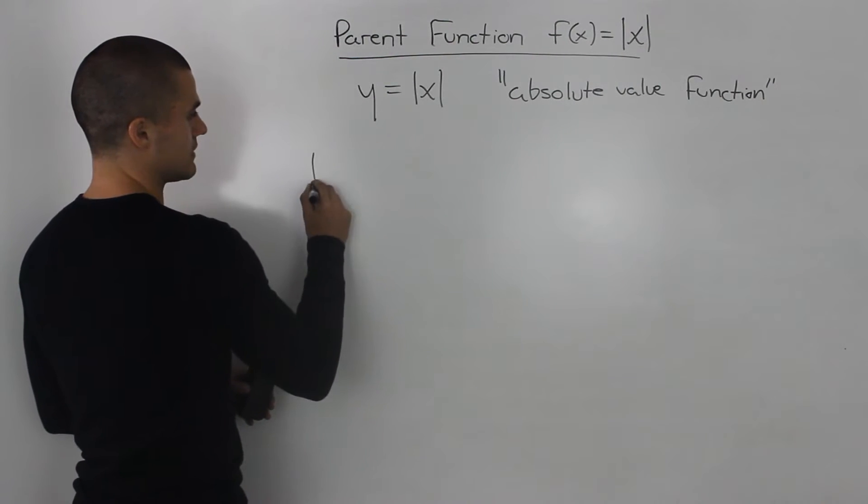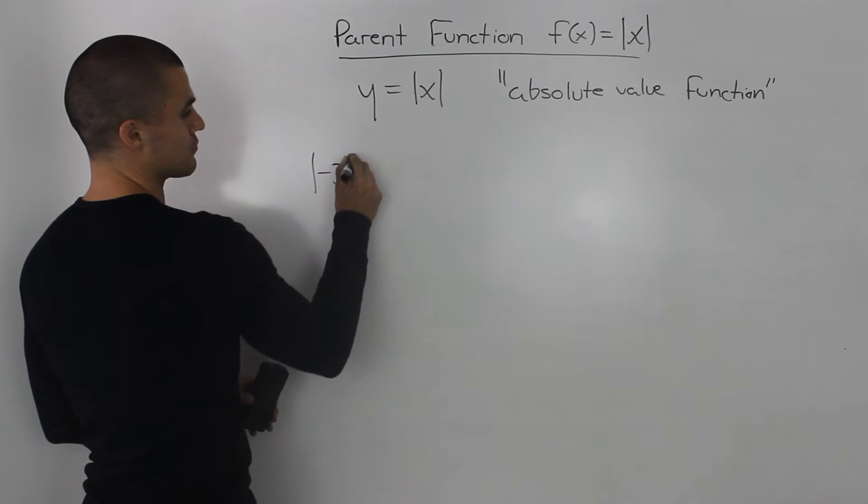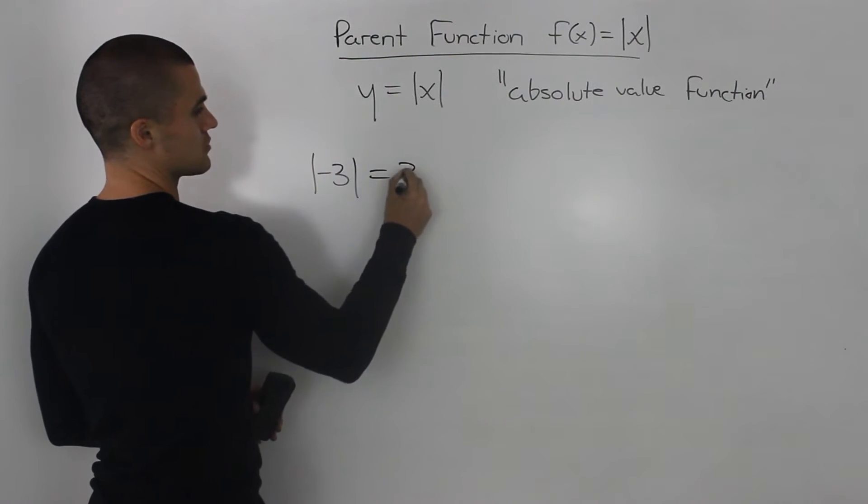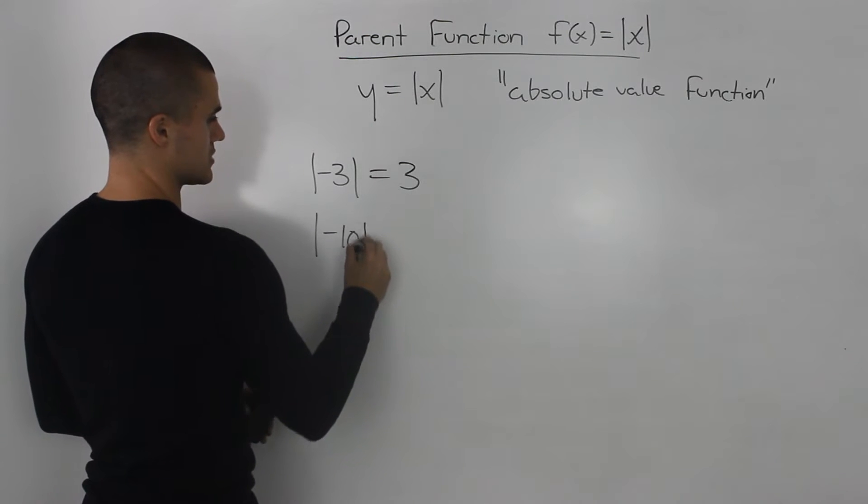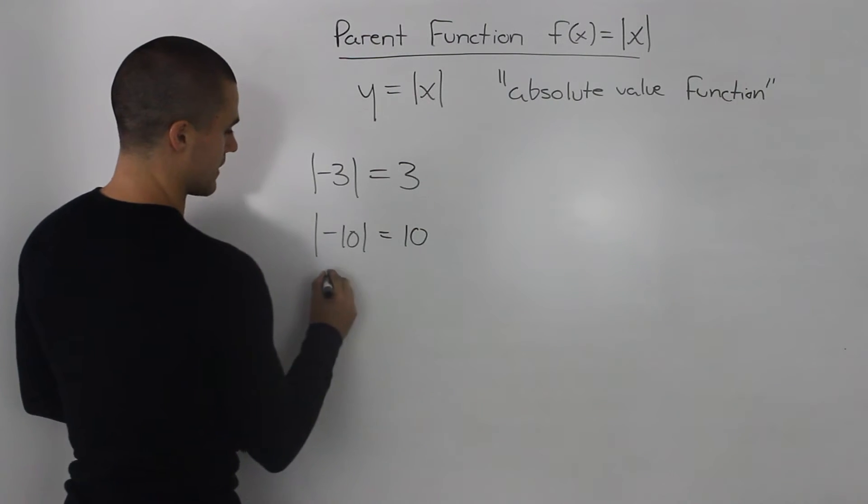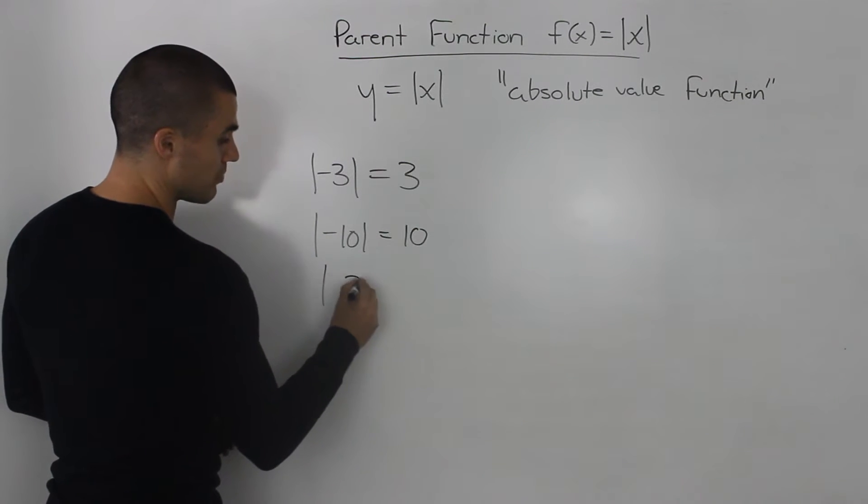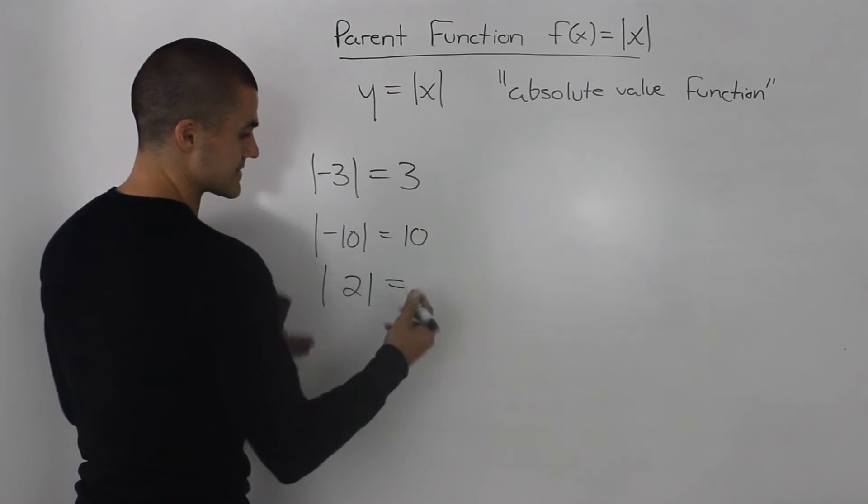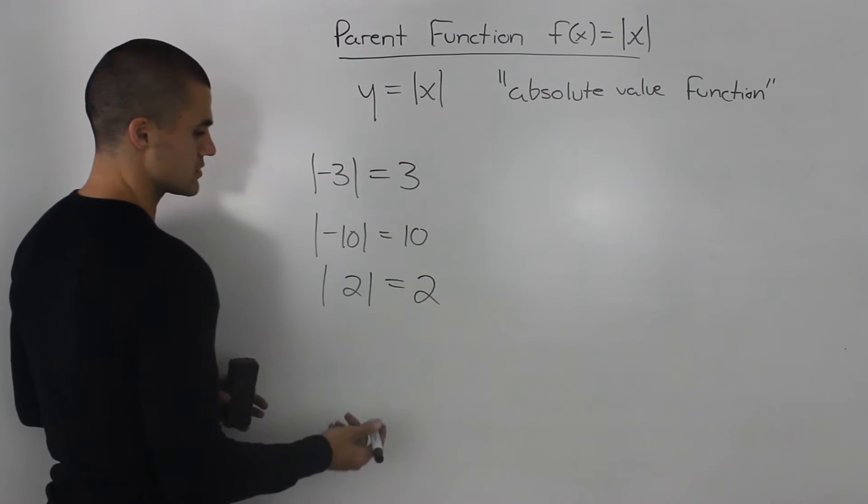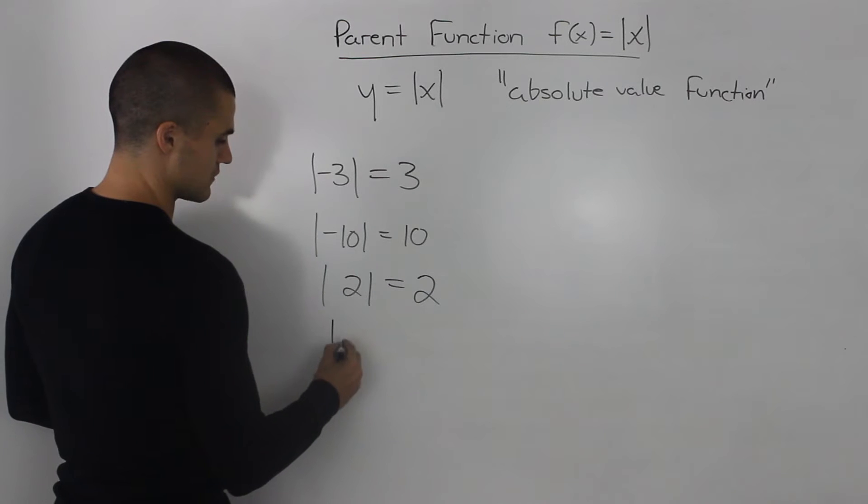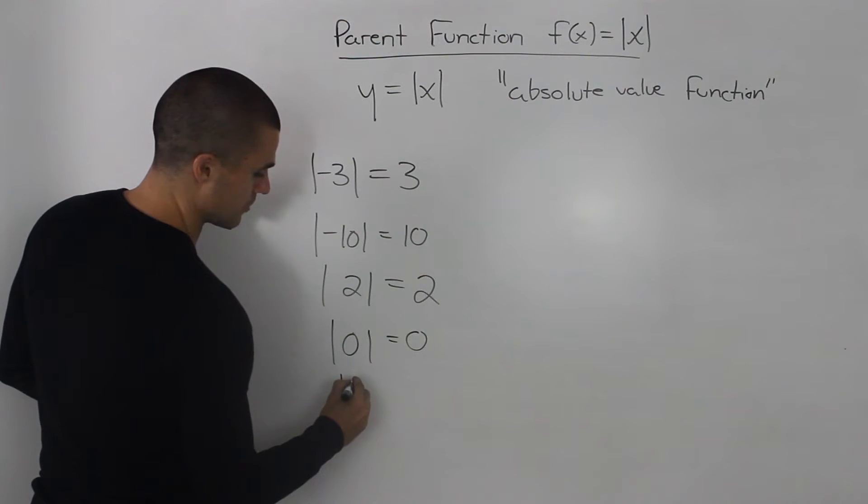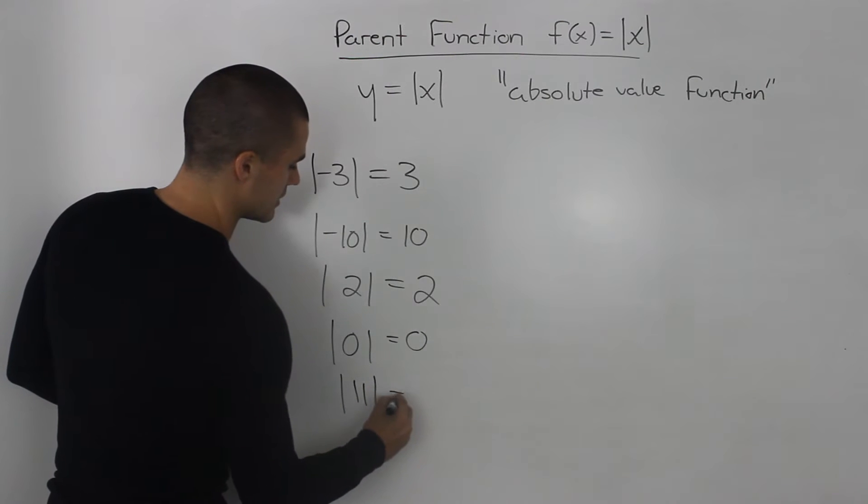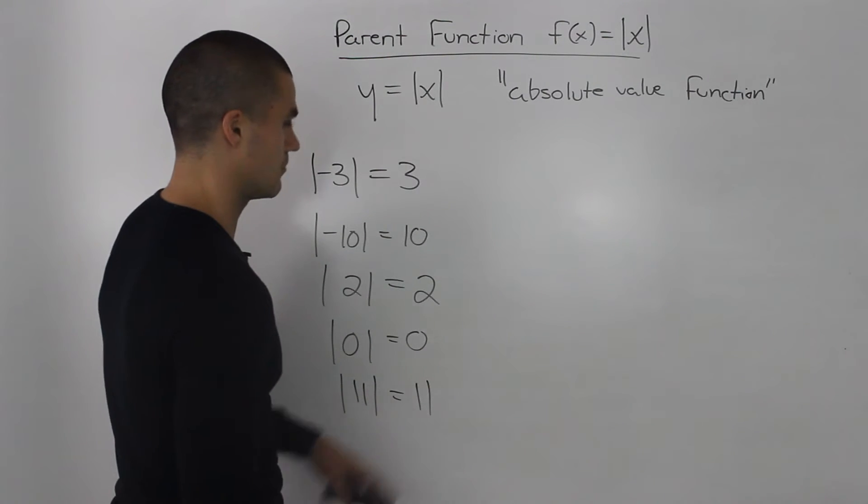So for example, the absolute value of negative 3 is just equal to positive 3. The absolute value of negative 10 is just equal to positive 10. The absolute value of positive 2 stays as is, it's just basically 2. The absolute value of 0 is just 0, and the absolute value of positive 11 is just equal to positive 11.